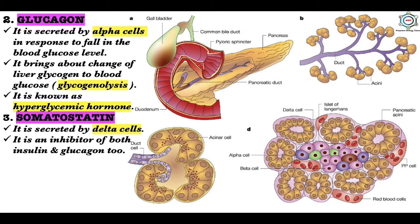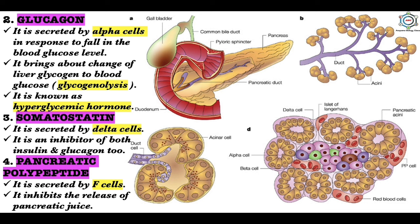The third pancreatic hormone is somatostatin, secreted by the delta cells. It is an inhibitor of both insulin and glucagon. The fourth is pancreatic polypeptide, secreted by F cells, which inhibits the release of pancreatic juice. Insulin and glucagon show antagonistic functions.